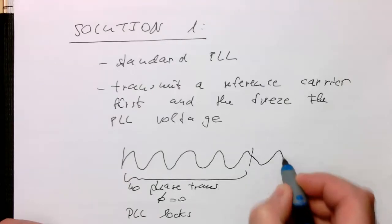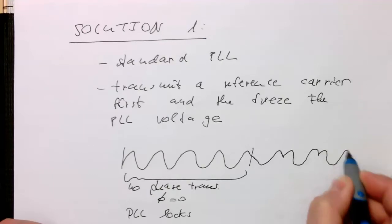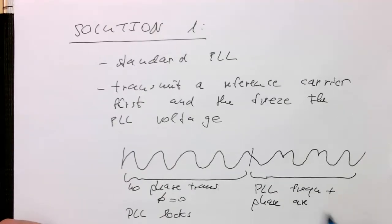Then afterwards we transmit the data with phase changes, of course, and the PLL is frozen in this period here. So the PLL frequency and phase is kept constant just by keeping the VCO voltage at a constant level.